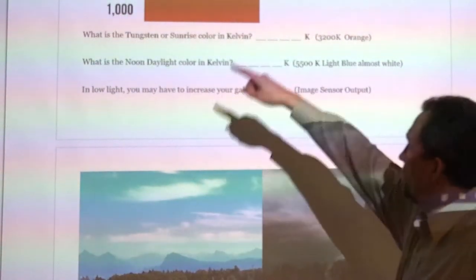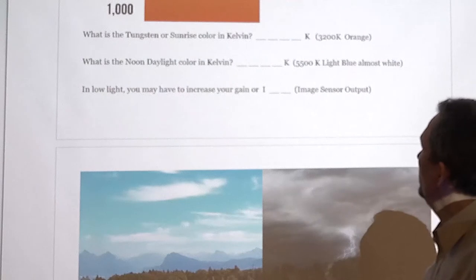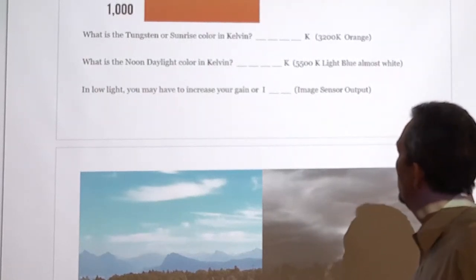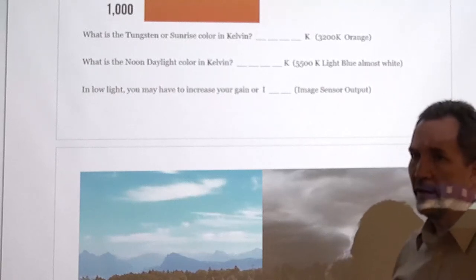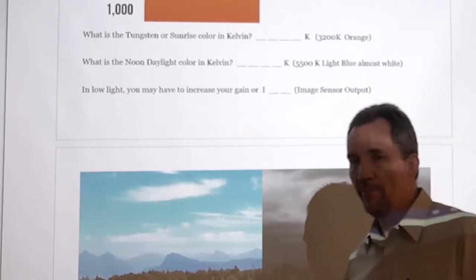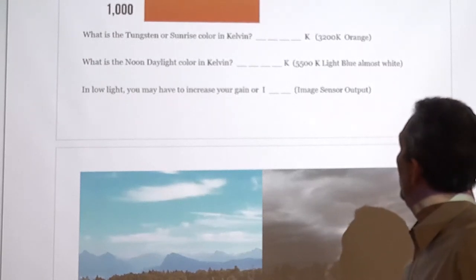Alright, so that is what I asked you to do. What is tungsten sunrise color in Kelvin? 3,200 K. What is noon daylight? Also just called daylight in Kelvin. 5,500. Sometimes you hear 5,600. I'll just say 5,500. I think it's probably easier to remember.